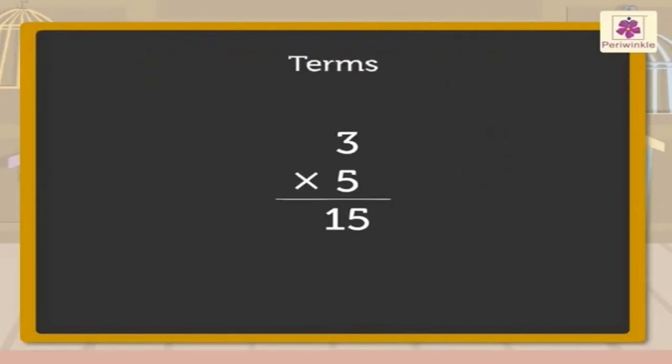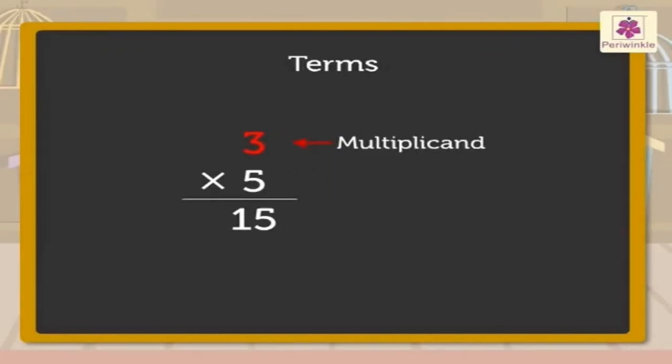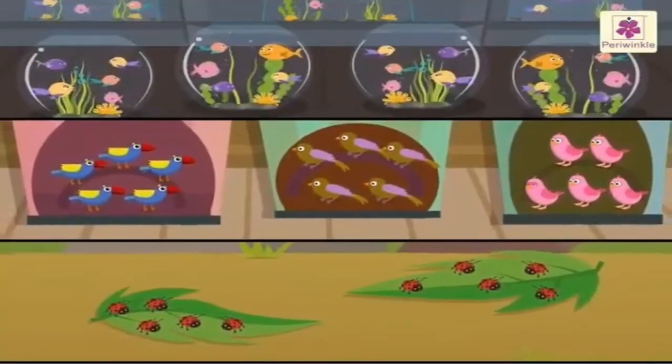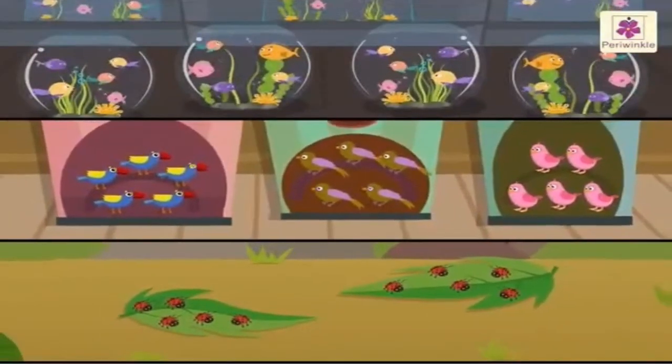Certain terms are also used for the numbers in a multiplication sentence. The number that is multiplied by another number is called the multiplicand. The number by which another number is multiplied is called the multiplier. The number obtained by multiplying two numbers is called the product. Hope it was fun to learn the concept of multiplication with the fish, birds and the ladybirds.